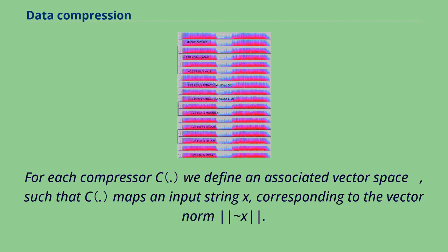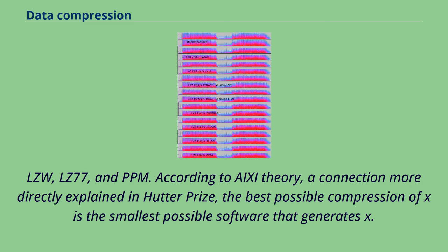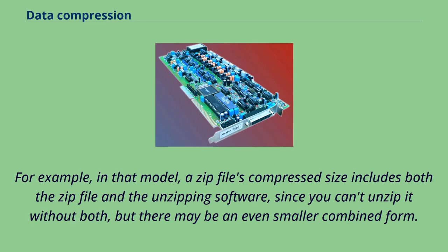Compression algorithms implicitly map strings into implicit feature space vectors, and compression-based similarity measures compute similarity within these feature spaces. For each compressor C we define an associated vector space, such that C maps an input string X corresponding to the vector norm |X̃|. Feature vectors can be used to examine representative lossless compression methods: LZW, LZ77, and PPM. According to AIT theory, as more directly explained in the Hutter Prize, the best possible compression of X is the smallest possible software that generates X. For example, a zip file's compressed size includes both the zip file and the unzipping software, since you can't unzip it without both, but there may be an even smaller combined form.